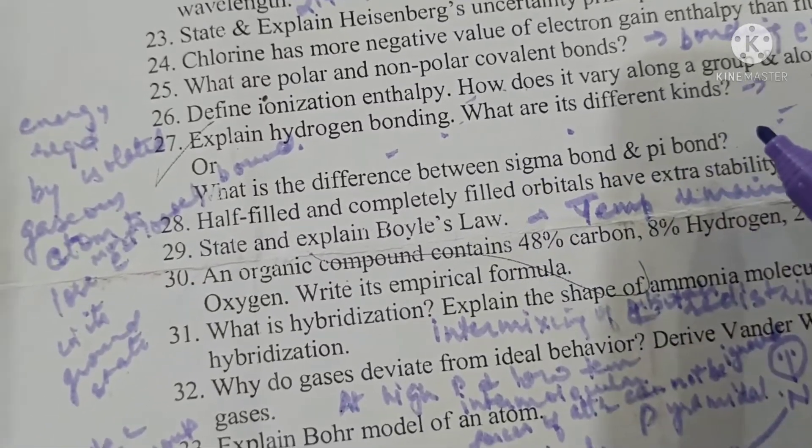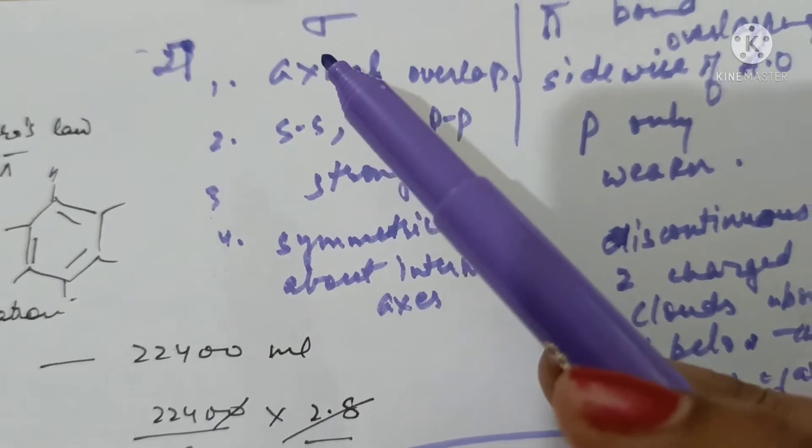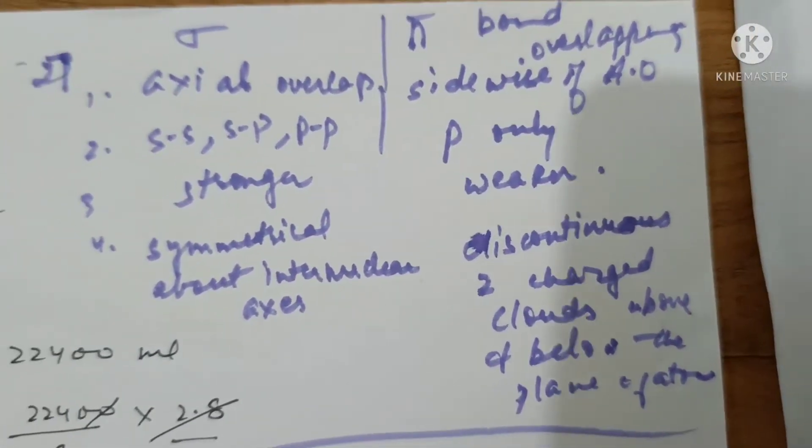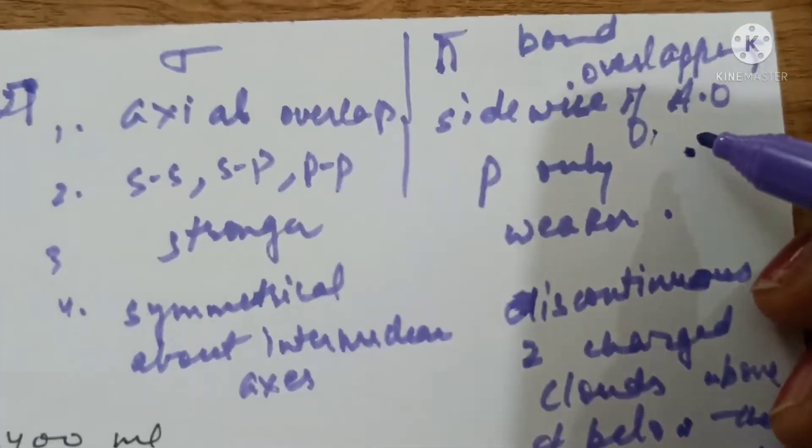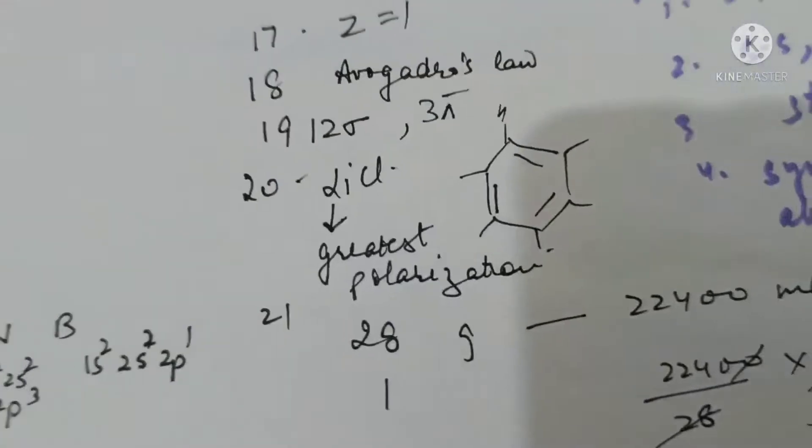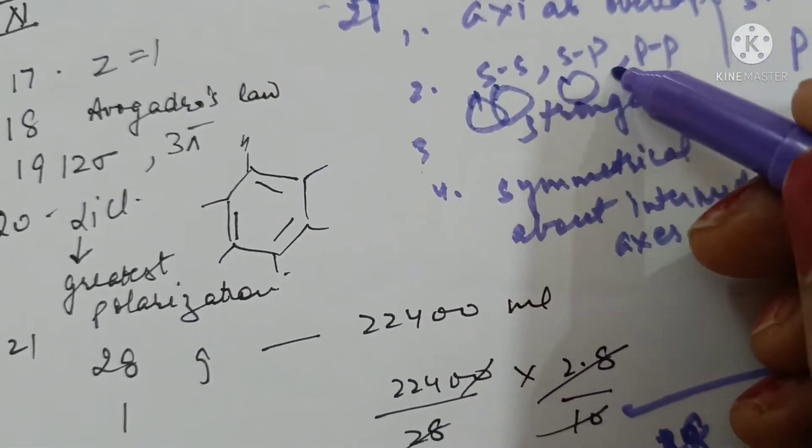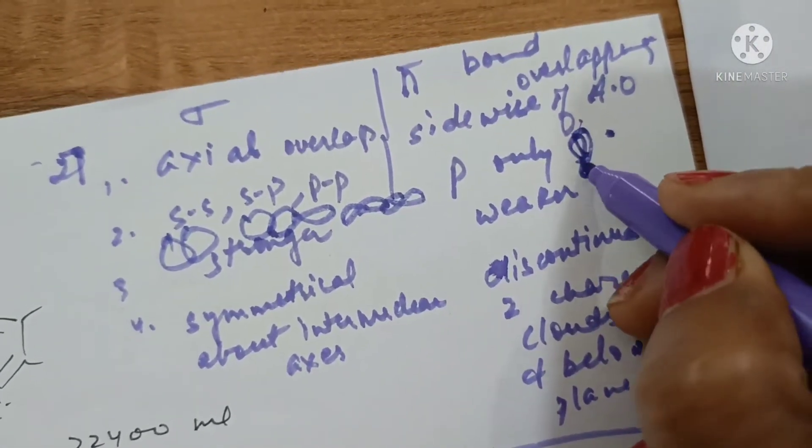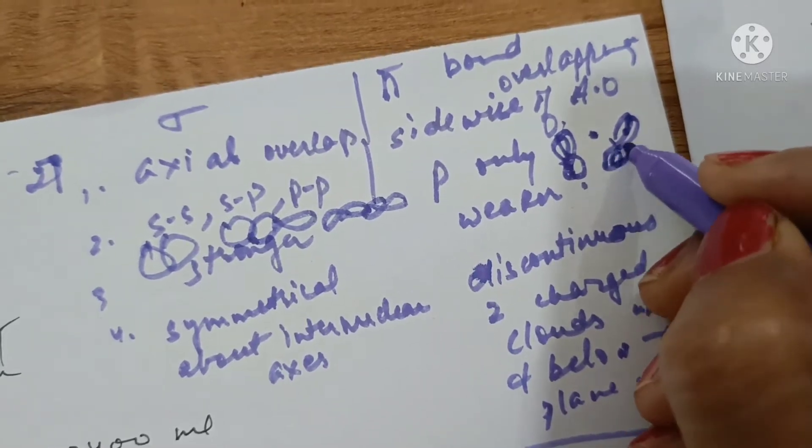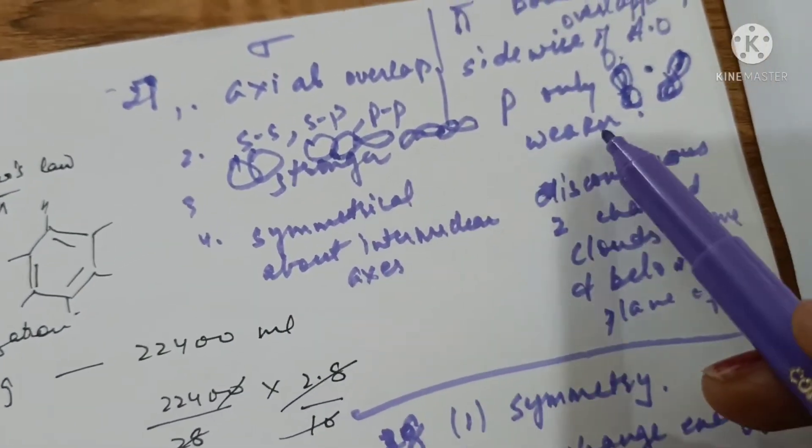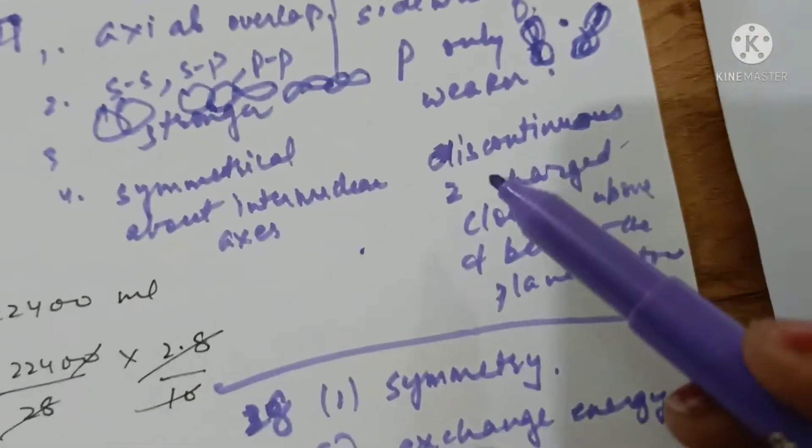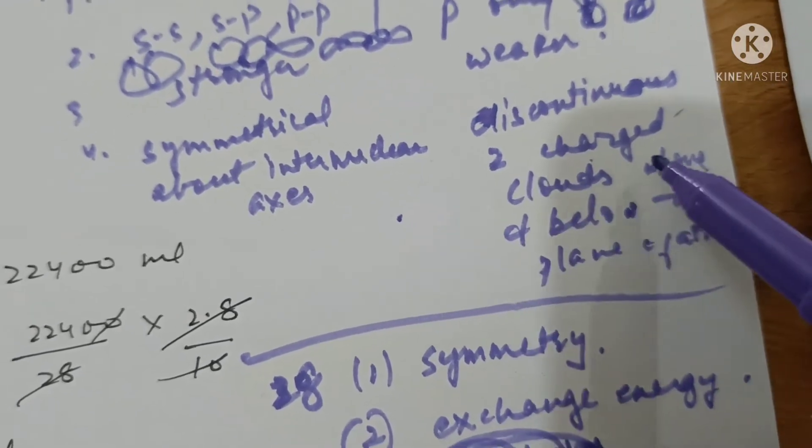What is the difference between sigma and pi bonds? When there is axial overlap between two orbitals it is called sigma bond. When there is sideway overlap of atomic orbitals like p and p then it is called pi orbitals. Axial overlap can occur between s and s, s and p and p and p whereas pi bond is formed between lateral overlap between p x and p x and p y and p y orbitals. Sigma bond is stronger, pi bond is weak. Sigma bond has symmetrical distribution about the internuclear axis whereas pi bond is discontinuous and forms two charged clouds one above the plane of atoms and one below the plane of atoms.